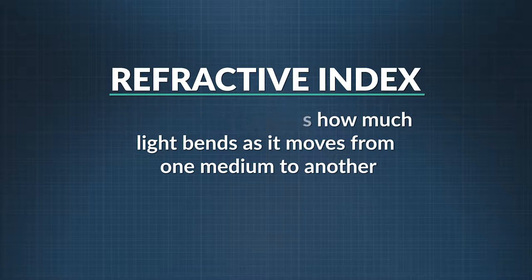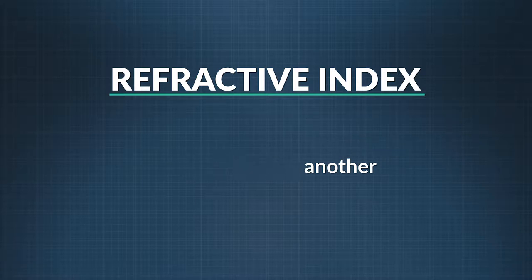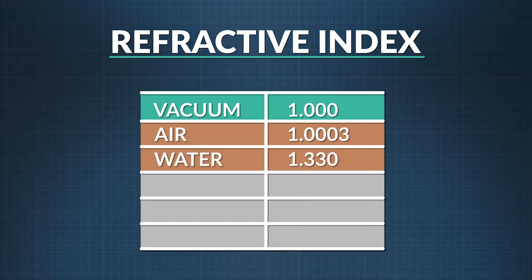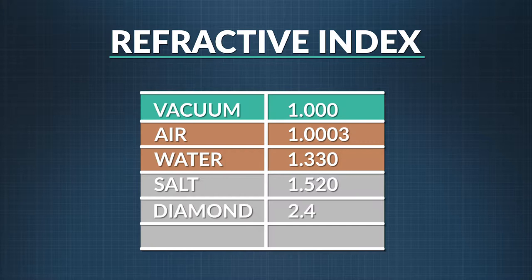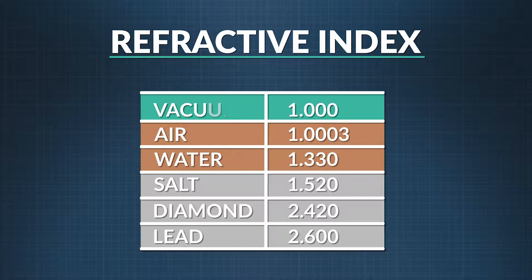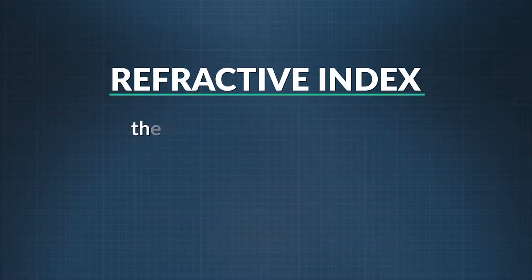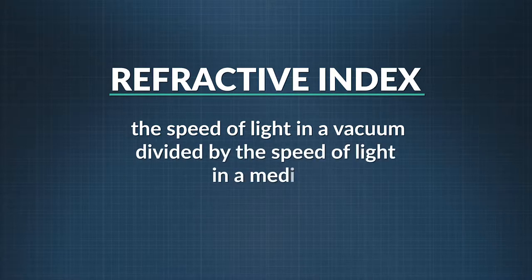To get an idea of refraction indices, here are a few examples: a vacuum is 1, air is 1.0003, water is 1.330, salt is 1.520, diamond is 2.420, and lead is 2.6. The higher the index of refraction, the more the material tends to bend light. To calculate the index of refraction, divide the speed of light in a vacuum by the speed of light in a medium.